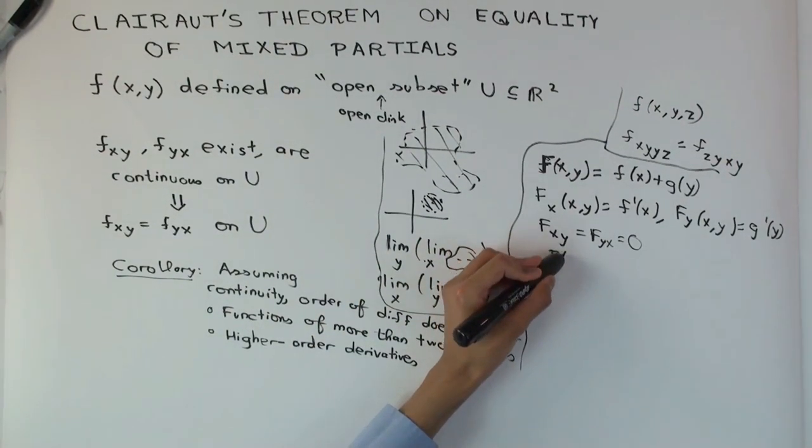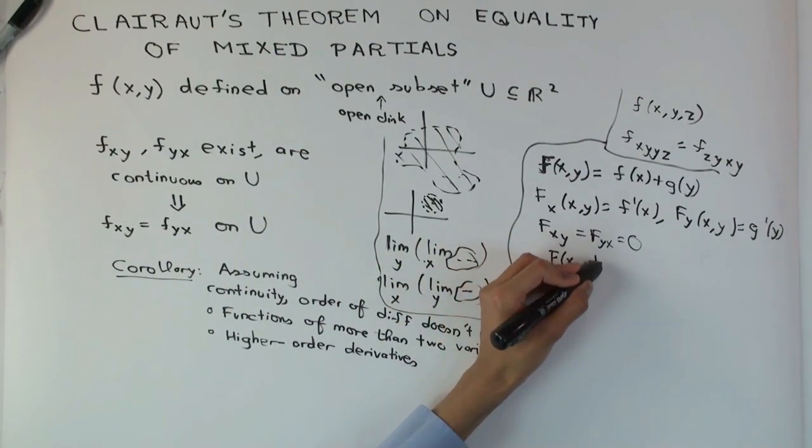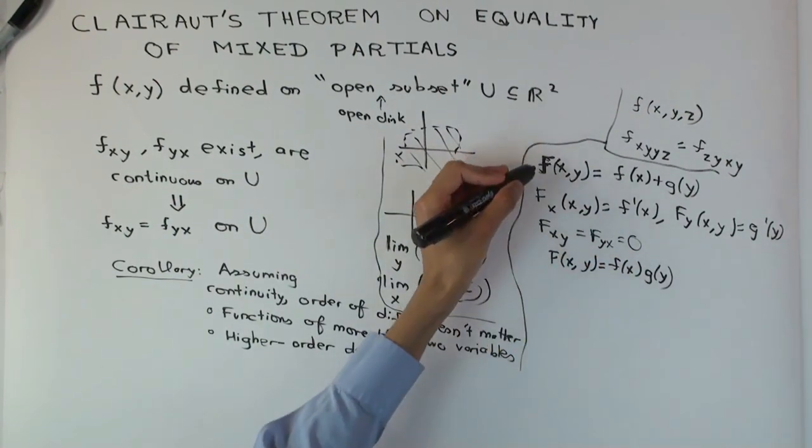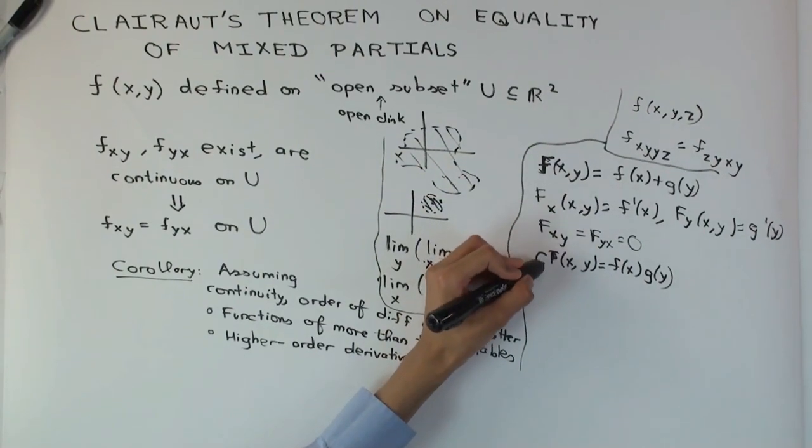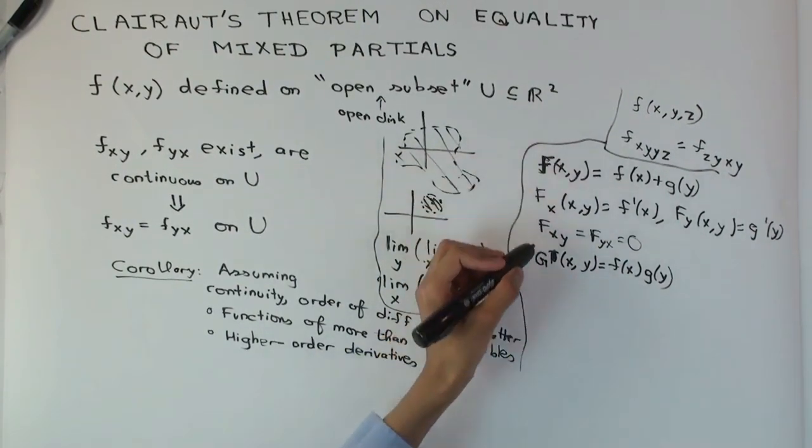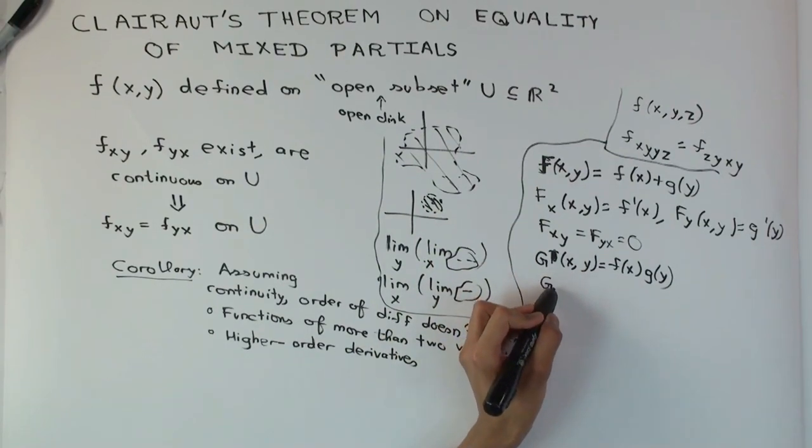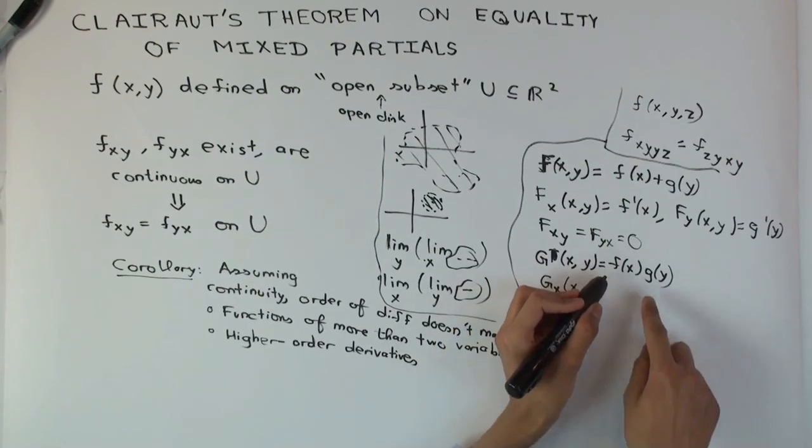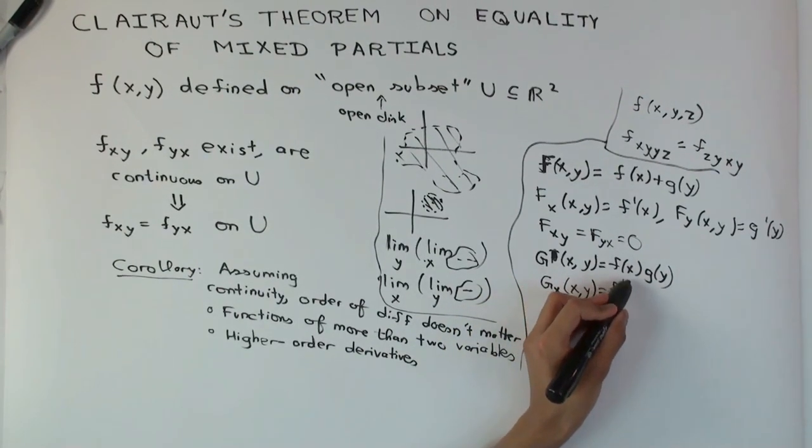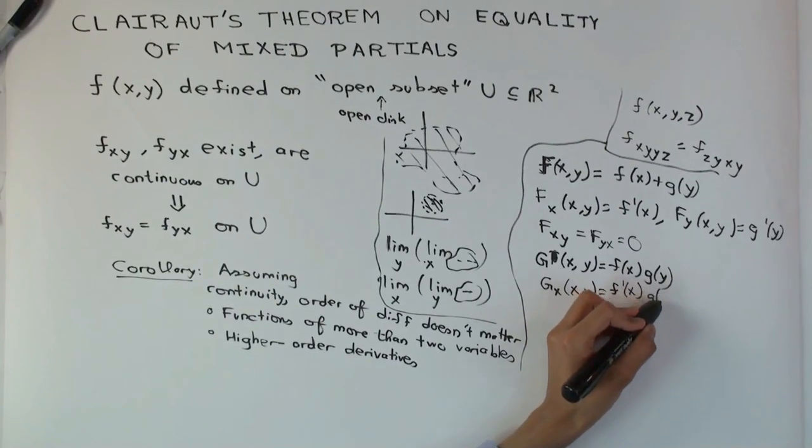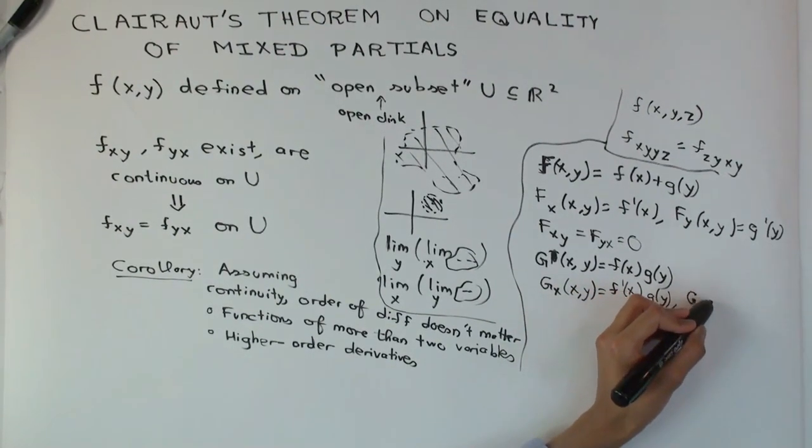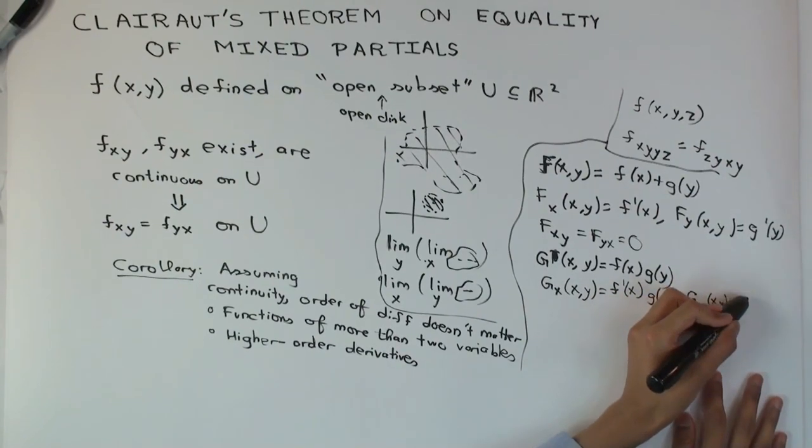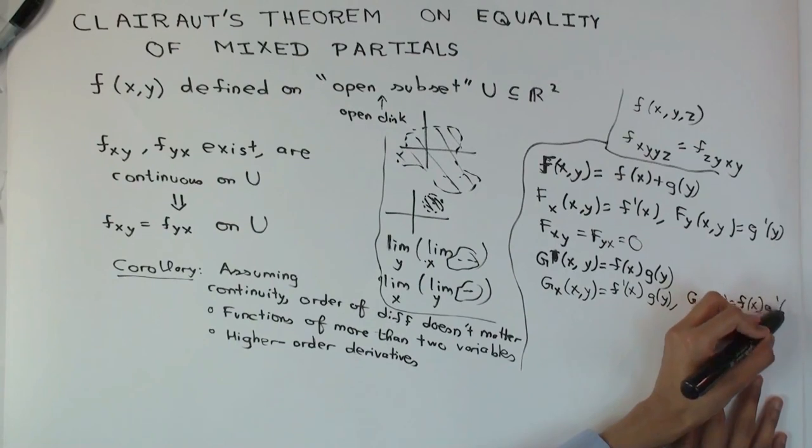Another case you can verify quickly is the multiplicatively separable one. Let g(x,y) = f(x)g(y). What is g sub x of (x,y)? Differentiating with respect to x, keeping y constant, you get f prime x times g(y). g sub y of (x,y) is f(x) times g prime y.